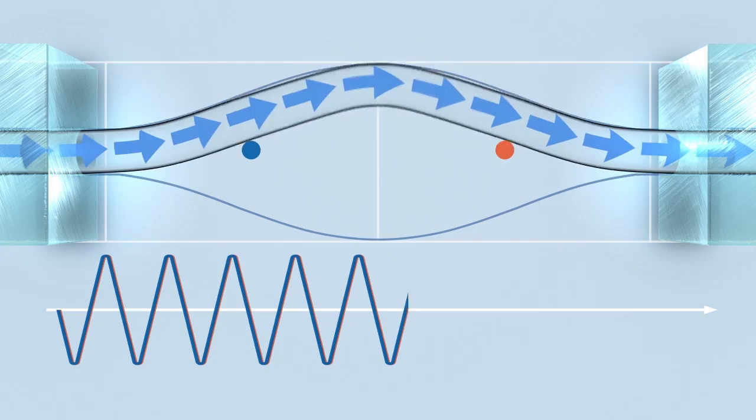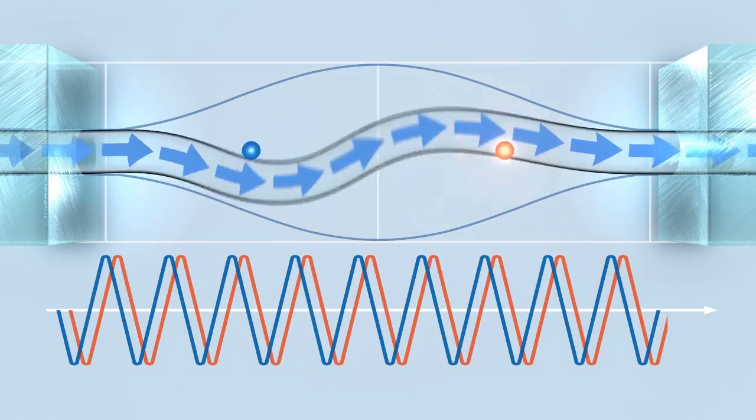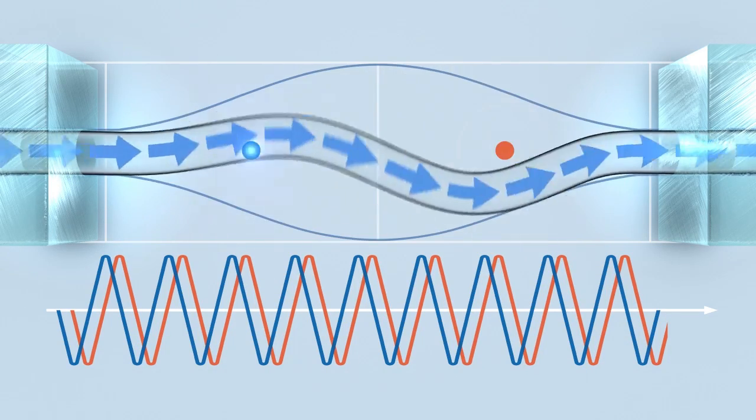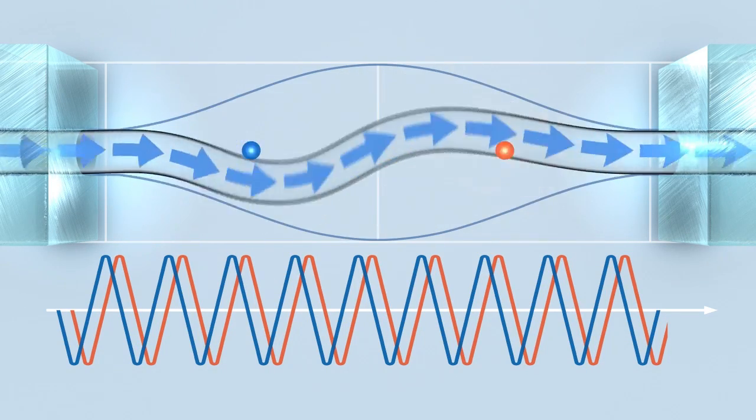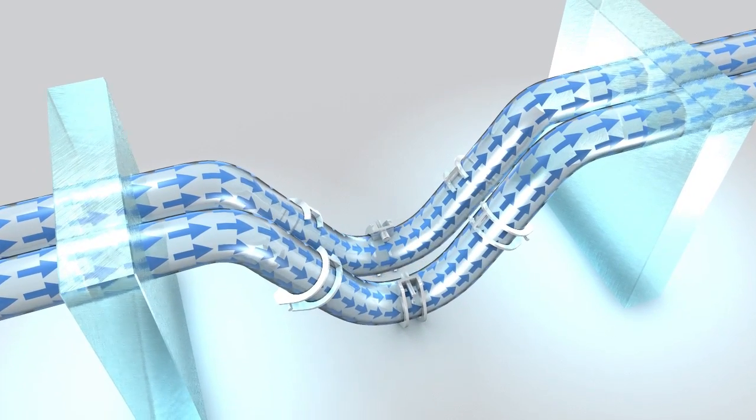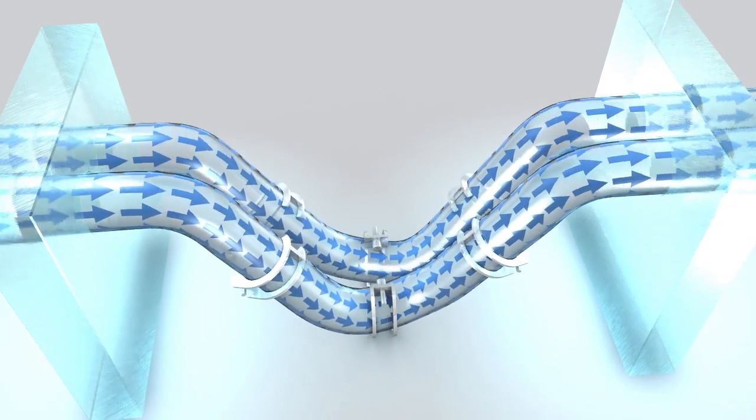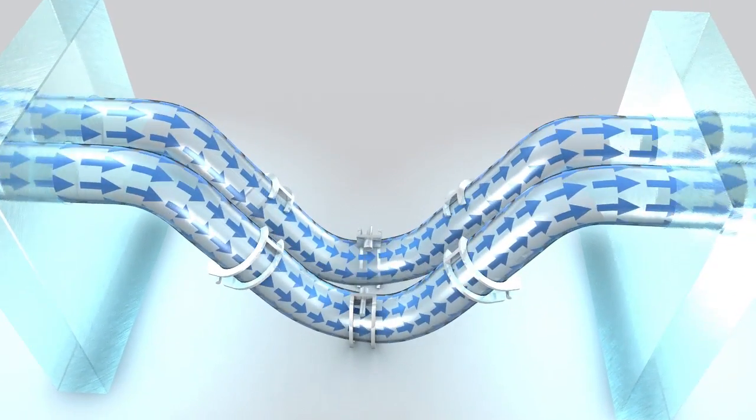Measurement is based upon the Coriolis principle. As flow starts, this effect causes the oscillation phase to change in direct proportion to the mass flow rate. The twin bent tube version measures the difference between the tubes, both amplifying the signal and providing improved characteristics for wider temperature and pressure ranges.